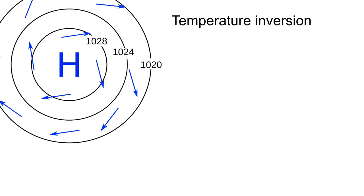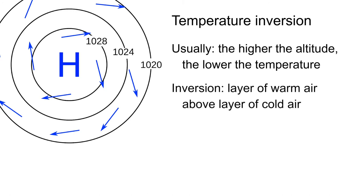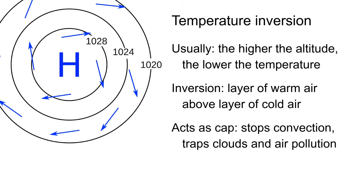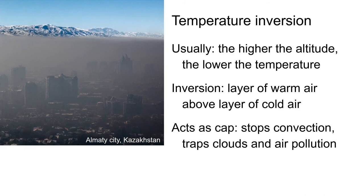You can also have a temperature inversion at a high pressure system. Normally the higher you get, the lower the temperature. But at a temperature inversion, you get a layer of warm air above a layer of cold air. This layer of warm air is created because of the descending air, and it traps a layer of cold air below. This warm air layer acts as a cap — it stops convection and traps clouds and air pollution. It stops convection because normally a parcel of air that's warmed will rise, but at some point it encounters a warmer layer of air above, so it stops convecting.